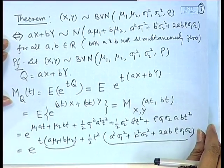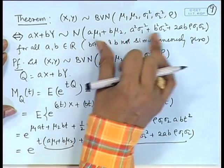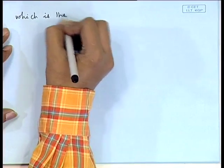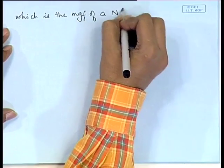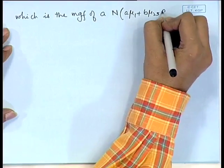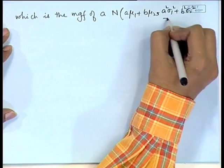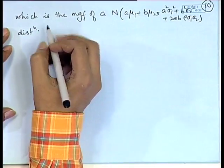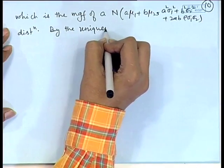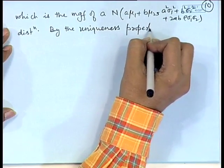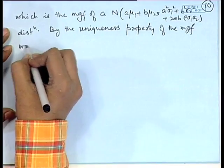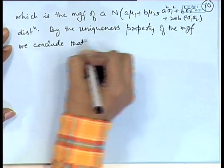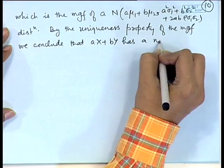By the uniqueness of the MGF, we conclude that AX + BY has a normal distribution with mean A mu_1 + B mu_2 and variance A squared sigma_1 squared + B squared sigma_2 squared + 2AB rho sigma_1 sigma_2.